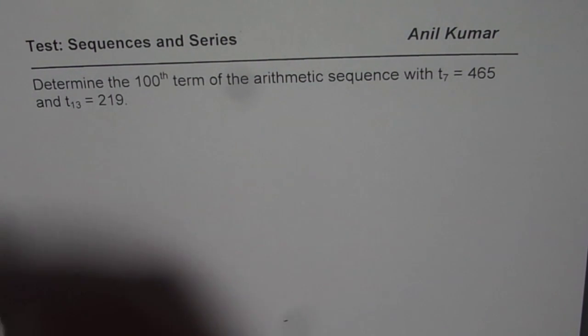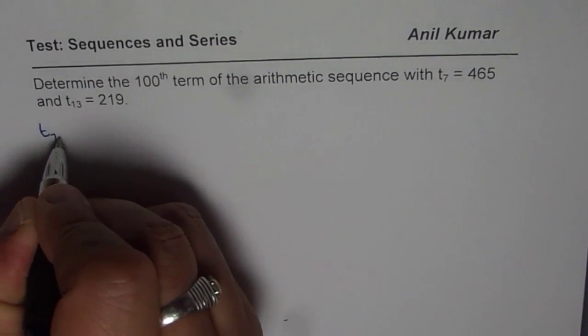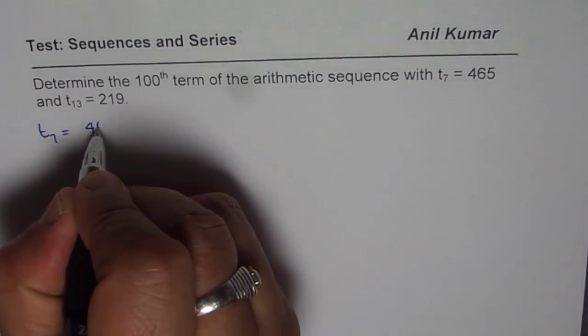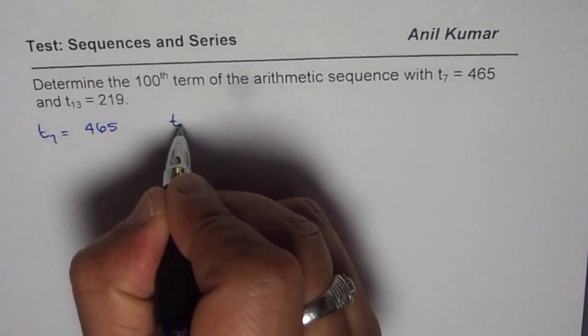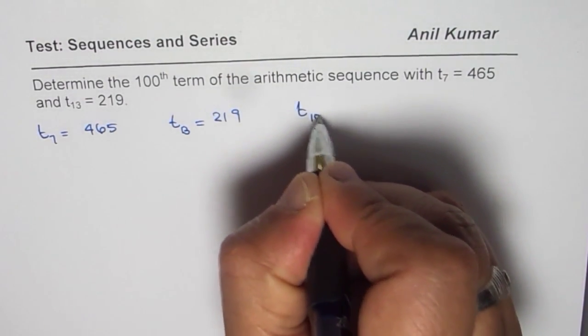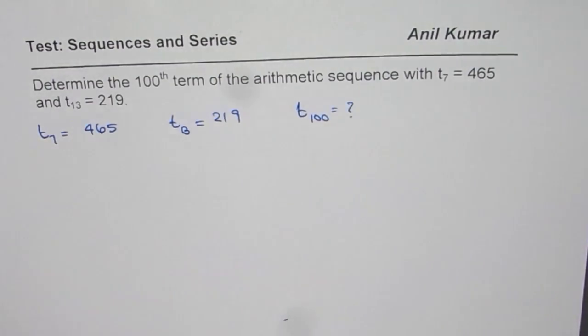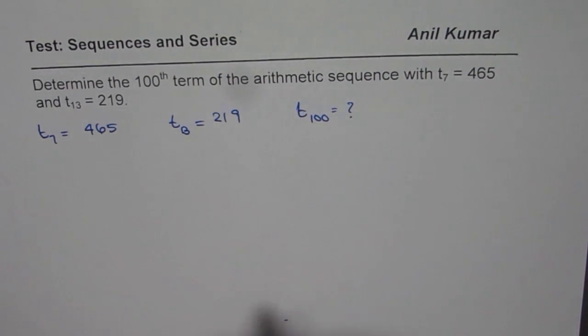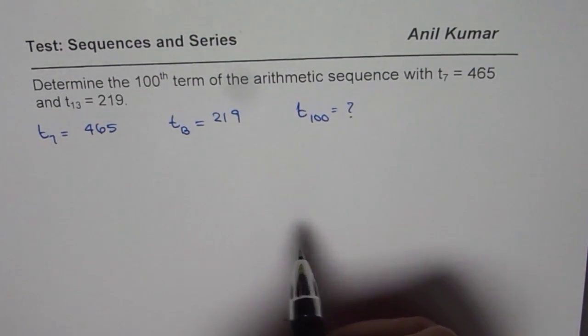So what we are given here is T7, the 7th term as 465, we are also given T13, the 13th term as 219. And we need to find the 100th term. That is the question, and it is all in an arithmetic series.